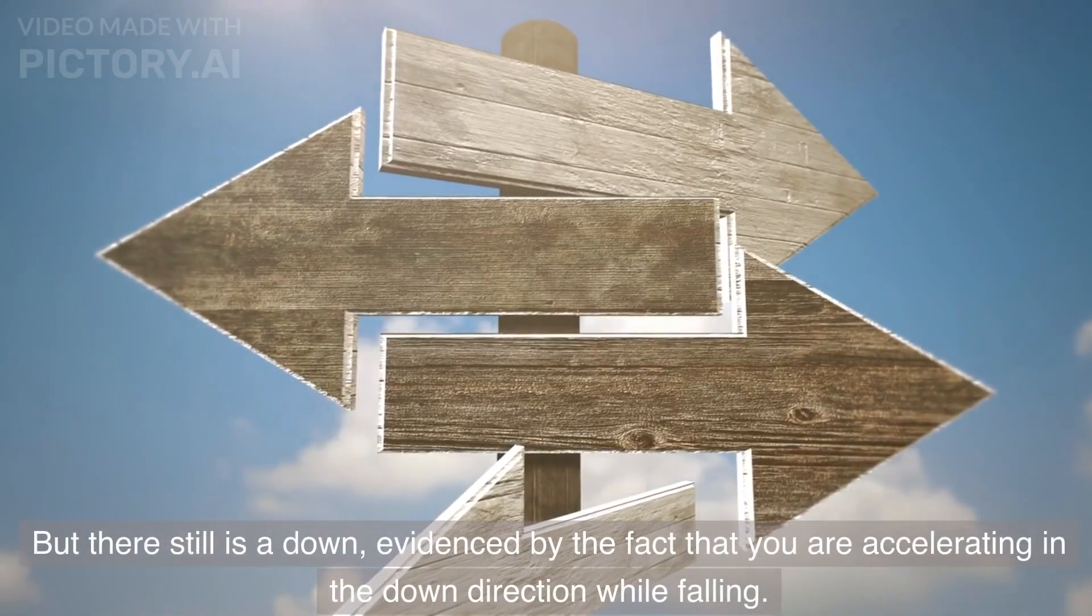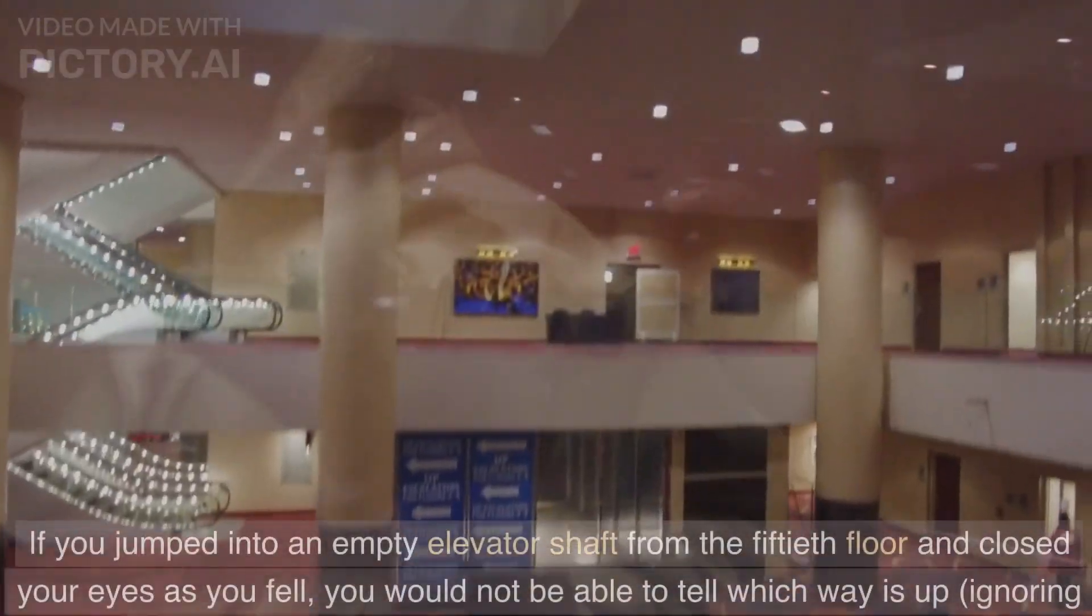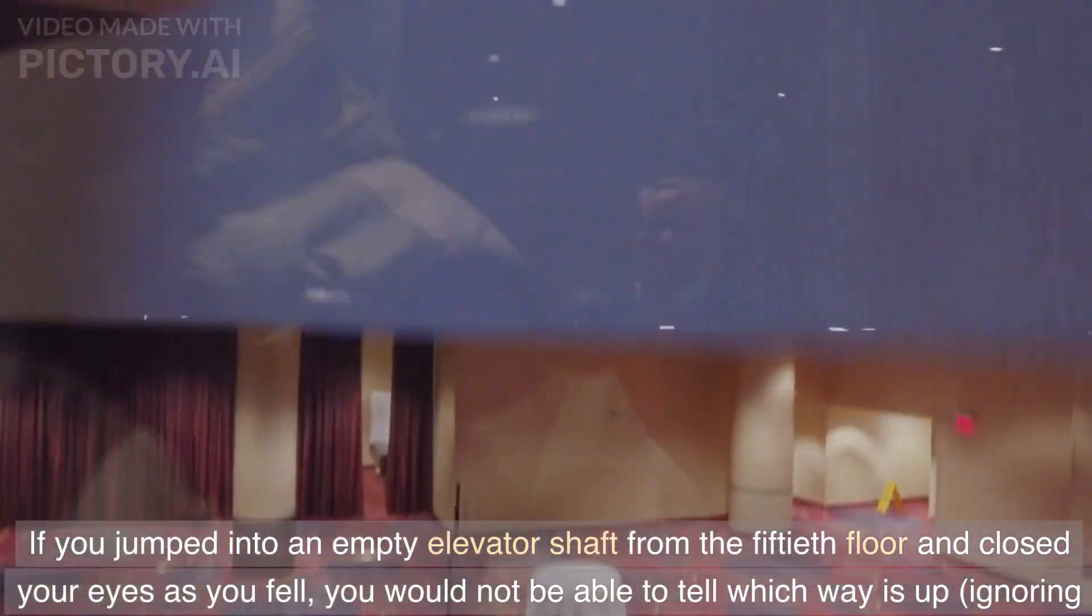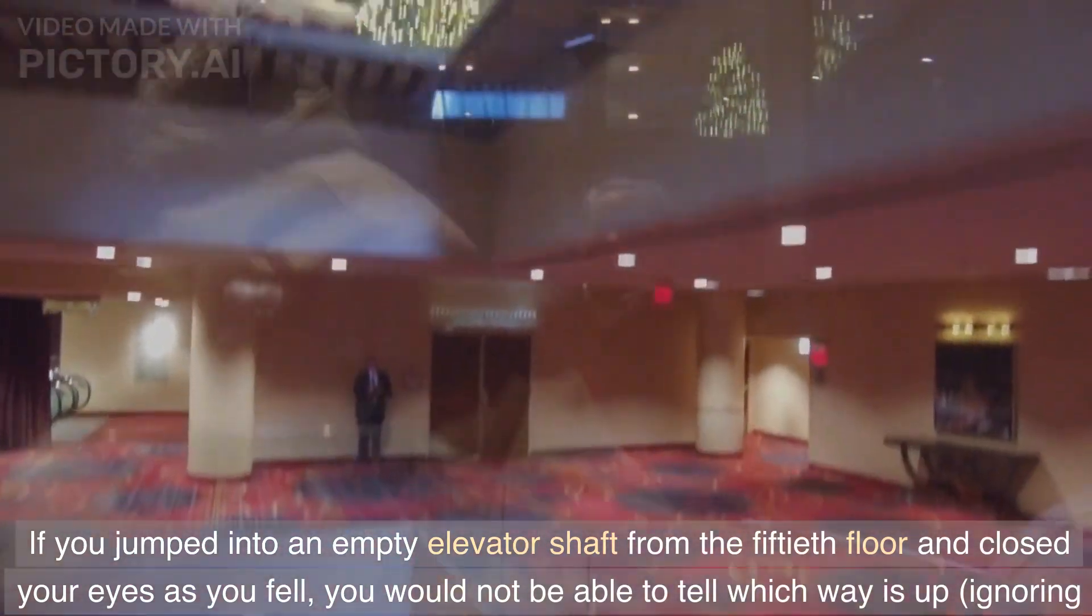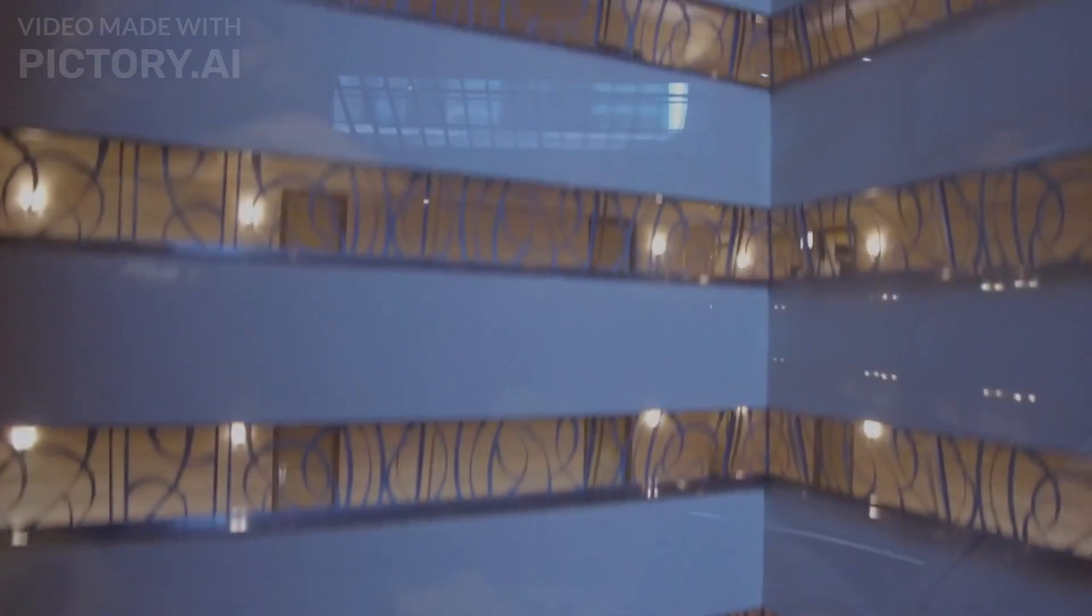But there still is a down, evidenced by the fact that you are accelerating in the down direction while falling. If you jumped into an empty elevator shaft from the fiftieth floor and closed your eyes as you fell, you would not be able to tell which way is up, ignoring air resistance.